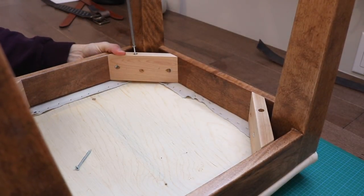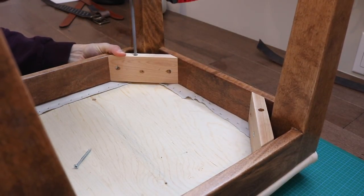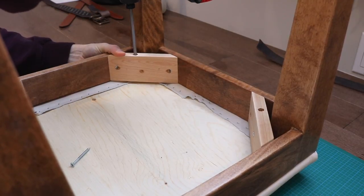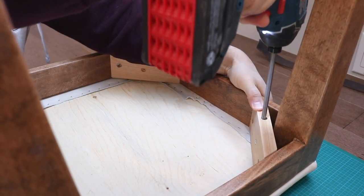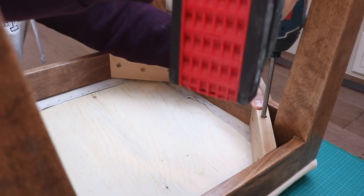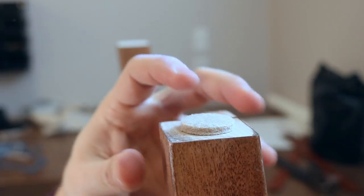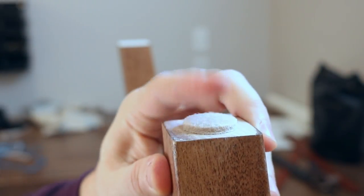To secure the seat to the frame, I screwed it in from the bottom through the 45 degree supports I added previously. The final step is a few felt pads to protect the floor and the chair is complete.